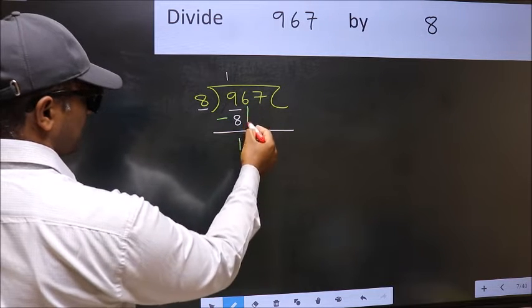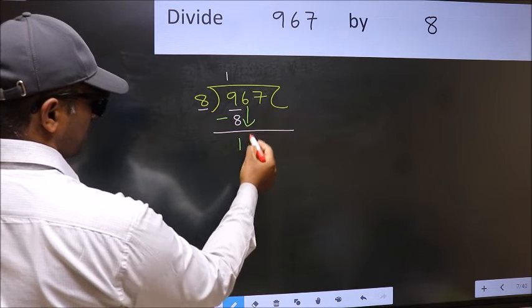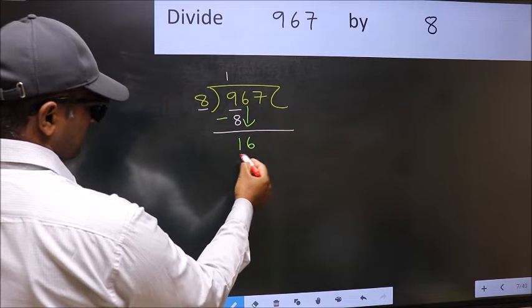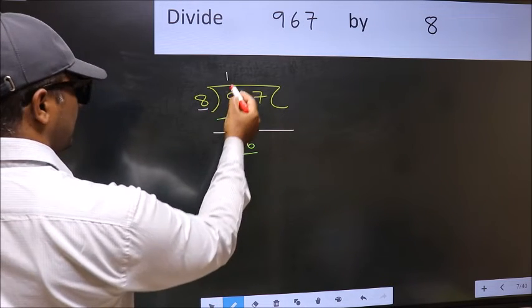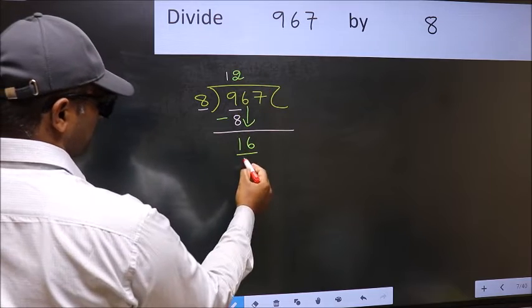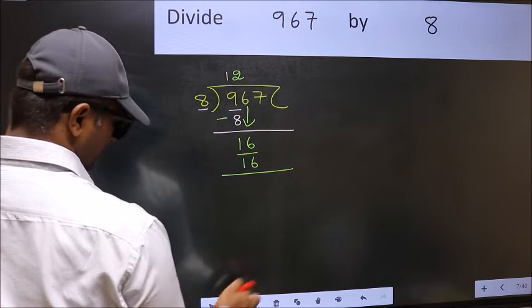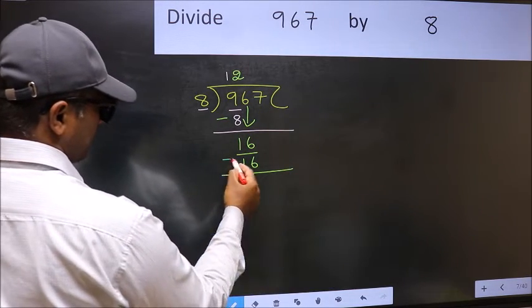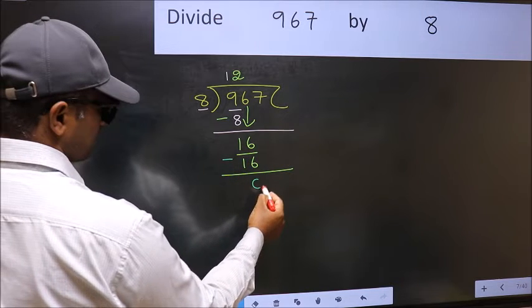After this, bring down the beside number. So 6 down. Now 16. When do we get 16 in 8 table? 8 twos, 16. Now we should subtract. 16 minus 16, 0.